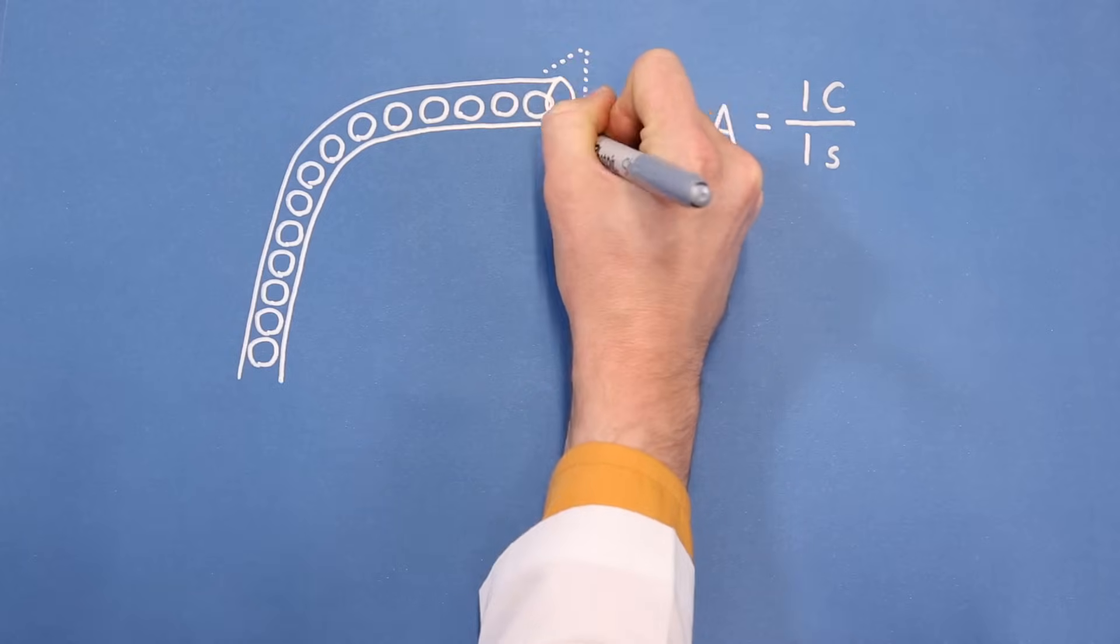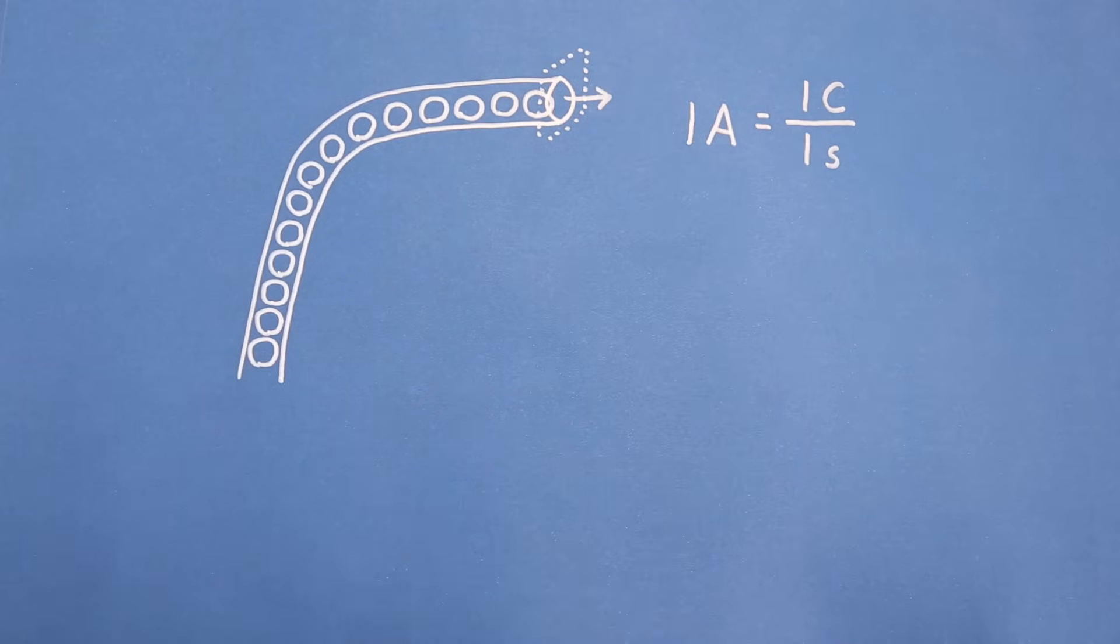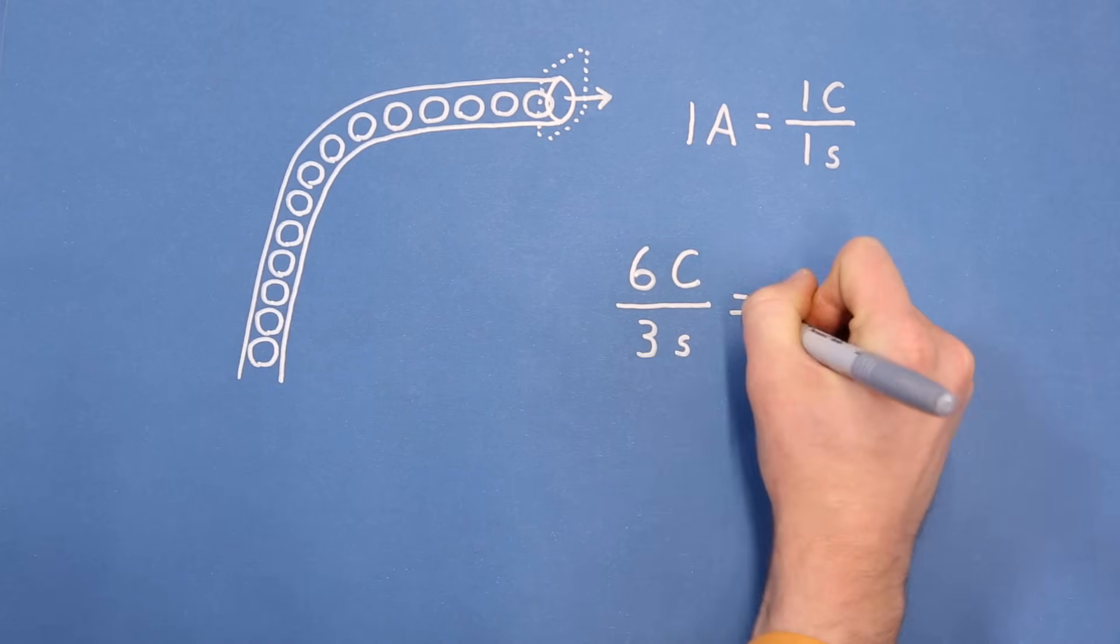Let's look at a cross-section of wire carrying an electric current. If it takes three seconds for six coulombs of charge to move through that cross-section, then we say that two amps are moving through that wire.